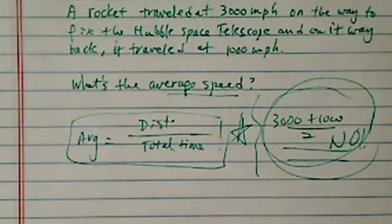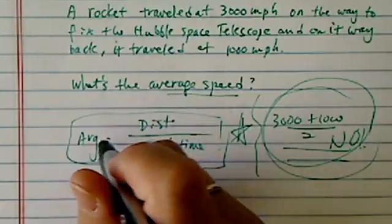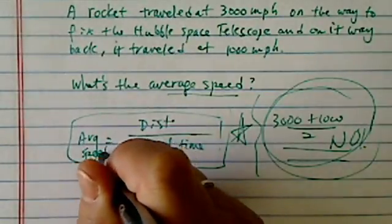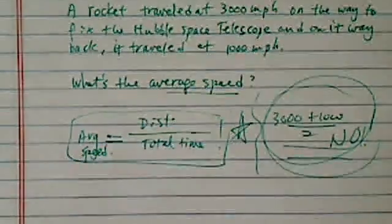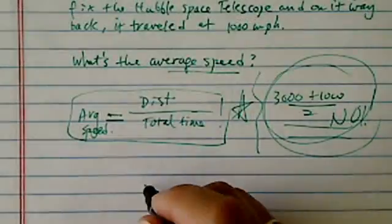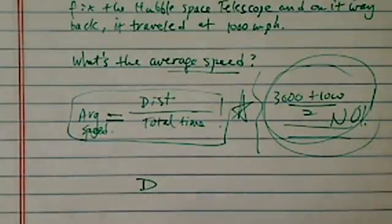Let's take a look at how we actually solve it using the definition of average speed. So distance traveled, let's say on the way it traveled a distance d.